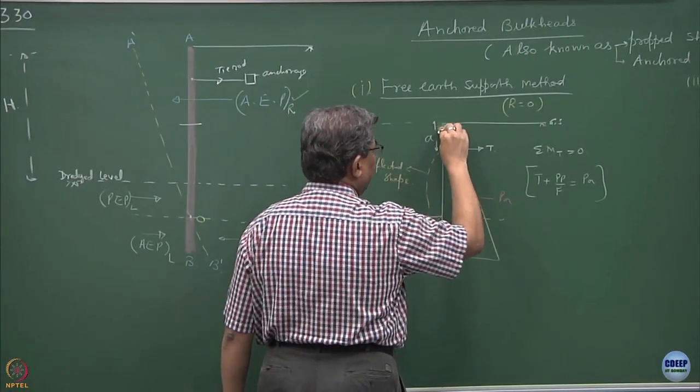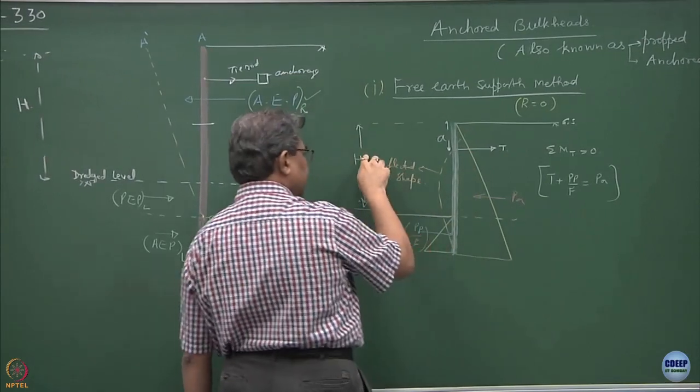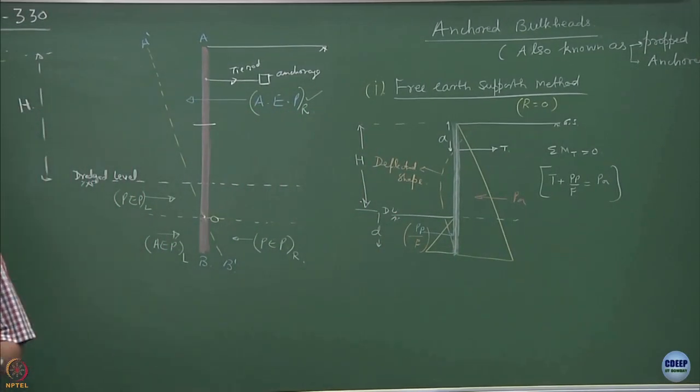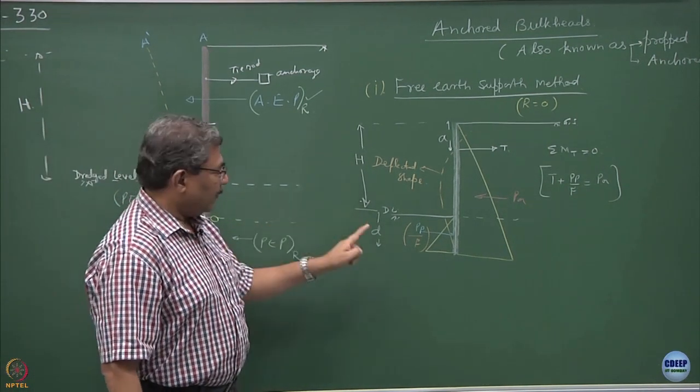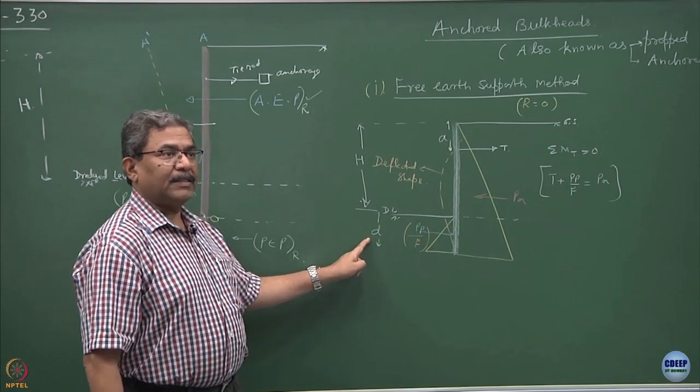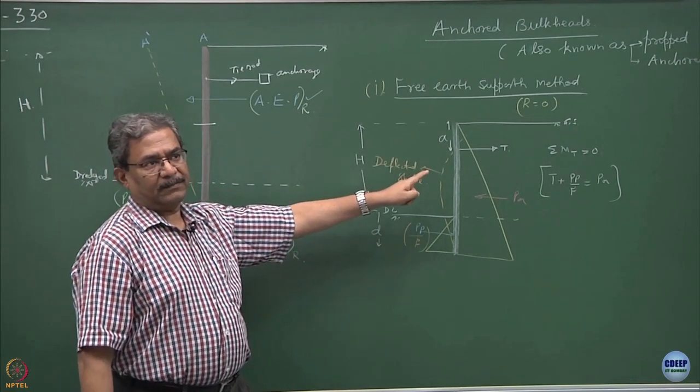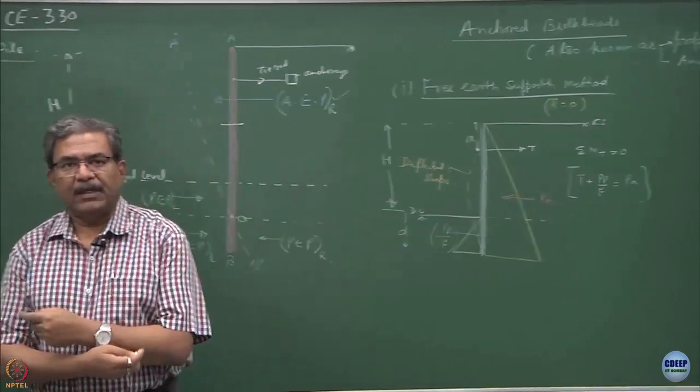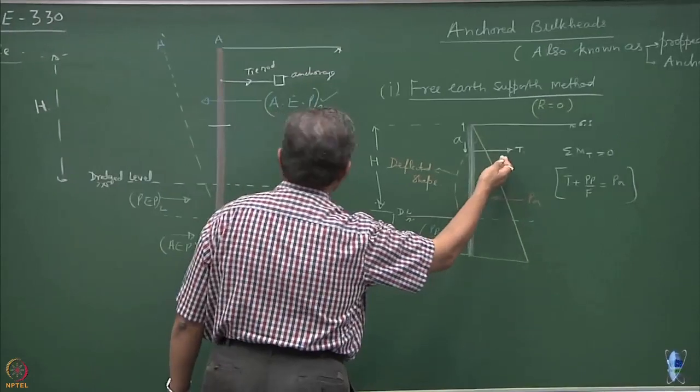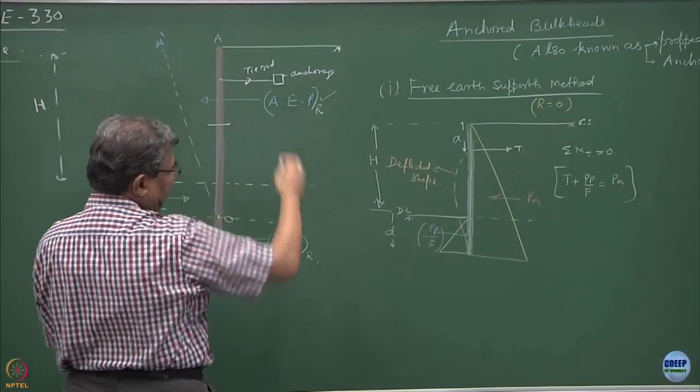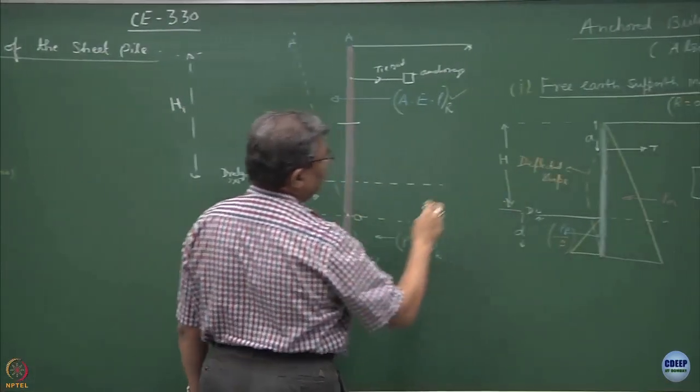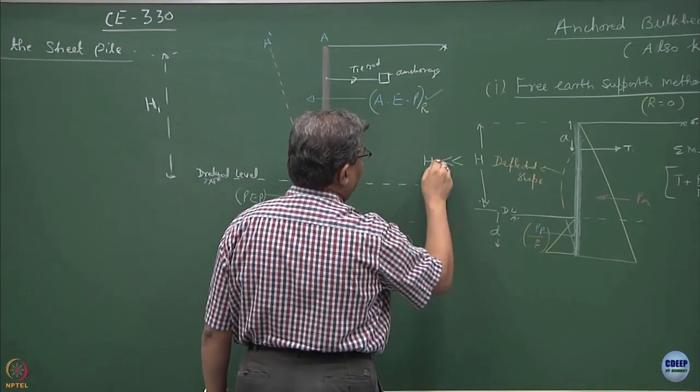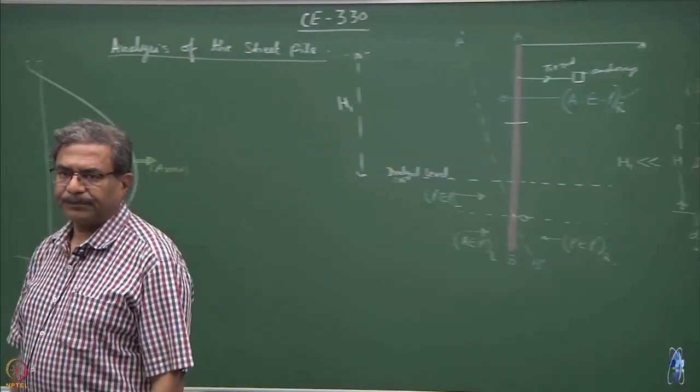So the problem statements could be like this, that I want to design a retaining wall of height H prefixed because H happens to be a finished product. This is our main objective. So for a given H value, what would be the value of D and we are analyzing this situation by assuming free earth support method for a propped system. The advantage of propping is I can go for higher heights as compared to the initial heights. So suppose if this is H1 and if I keep it as H, H is going to be higher than H1. This is the advantage which I am going to get.